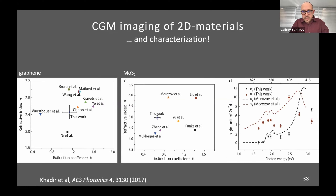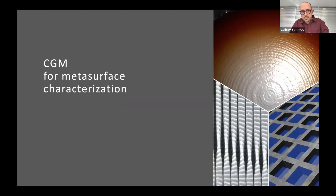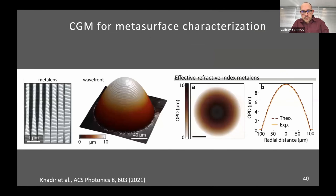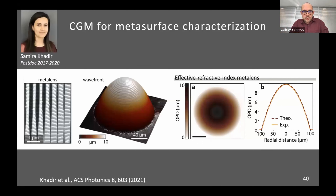We measured graphene and MoS₂, and compared with the literature for both the real and imaginary parts of the refractive index as a function of wavelength. The last object we investigated in nanophotonics was metasurfaces. Metasurfaces like metalenses are aimed to distort the wavefront, so using wavefront microscopy to characterize metalenses is the most natural characterization technique. The agreement between theory and experiment is very good. This nanophotonics work — nanoparticles, 2D materials, and metasurfaces — was the work of Samir Akadir and in collaboration with Michael Scholl, the previous speaker.